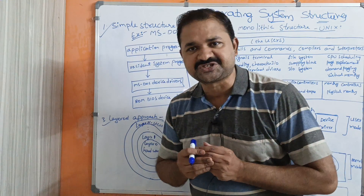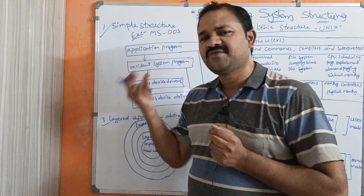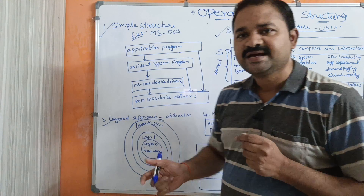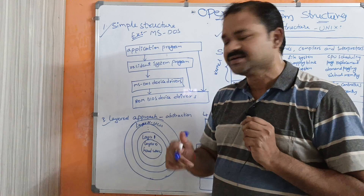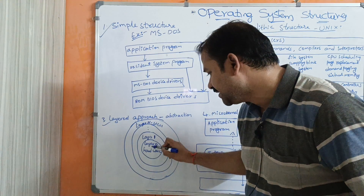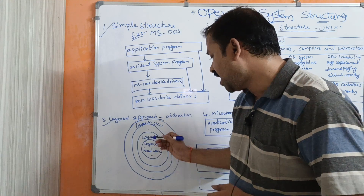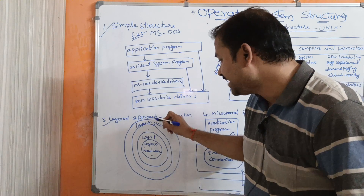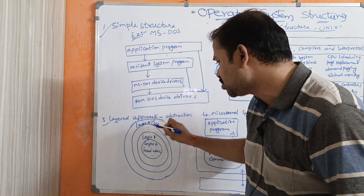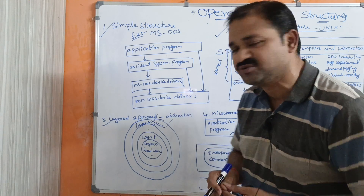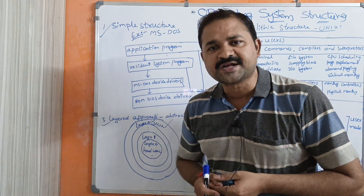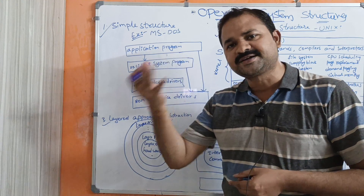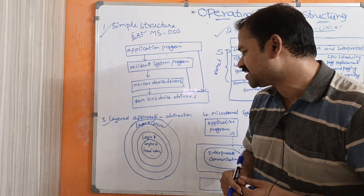The third one is layered structure. In this structure we have several modules where each module is called a layer. The bottom layer is layer 0, which represents hardware. The topmost layer is layer N, which represents the user. Each layer uses the services provided by its lower layers and provides those services to its upper layers.